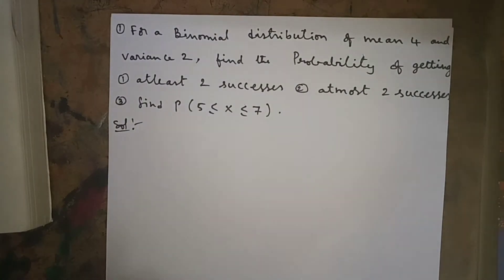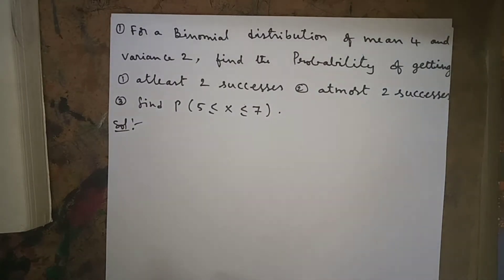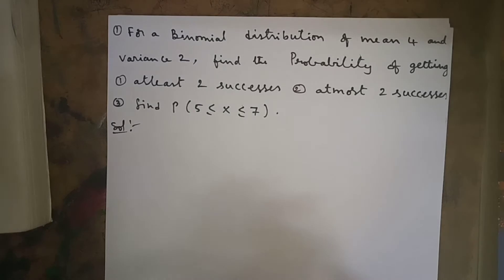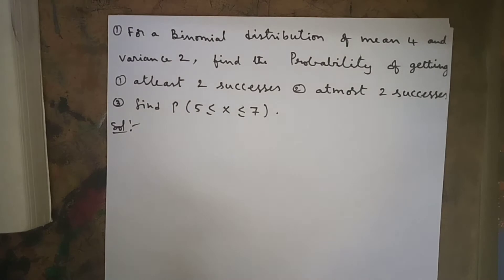For example, if a coin is tossed 1082 times, n = 1082, which is a very large value. If n is very large — countably infinite, like 1082, 7000, or 8000 — then we apply Poisson distribution. If n is fixed and countably finite, we apply binomial distribution.